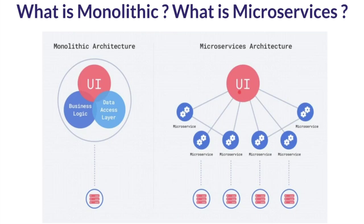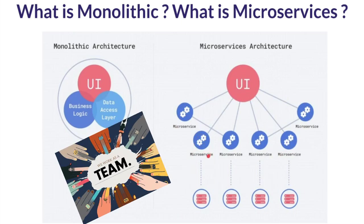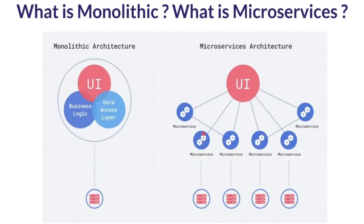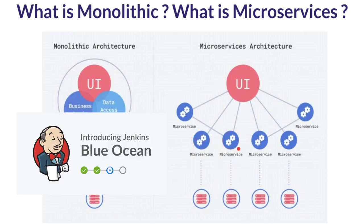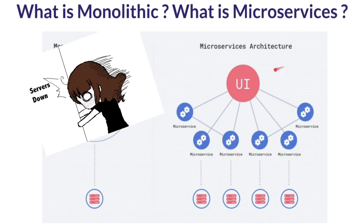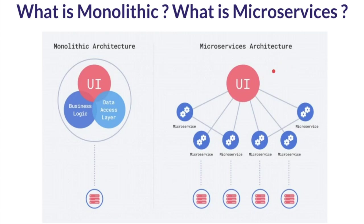Microservice architecture is a software product built using multiple small modules. These modules are independent, owned by a small team, and each has its own code base and its own CI/CD setup. If one module goes down, the customer can still use the product — they can continue using it. Each module also has its own data source. These are the basic differences between monolithic and microservice architecture.